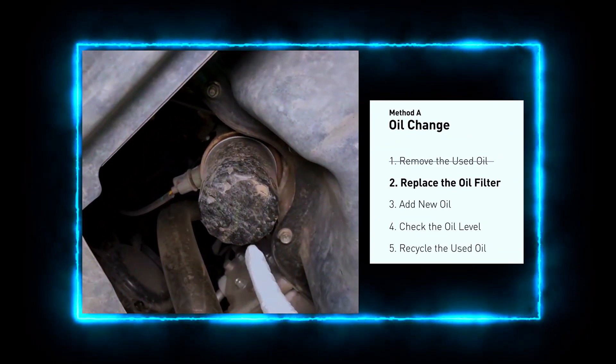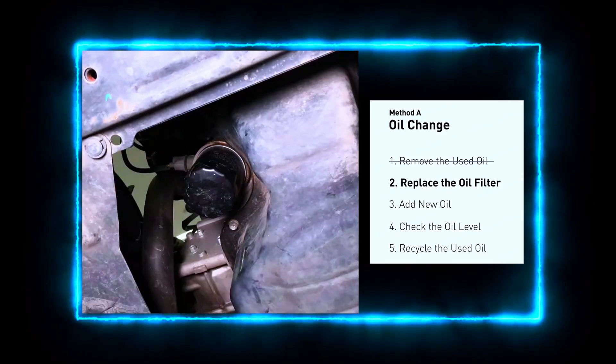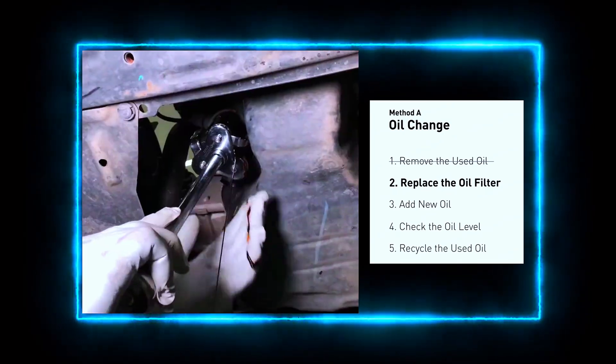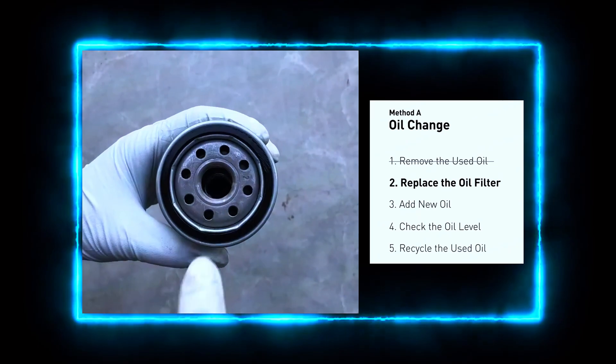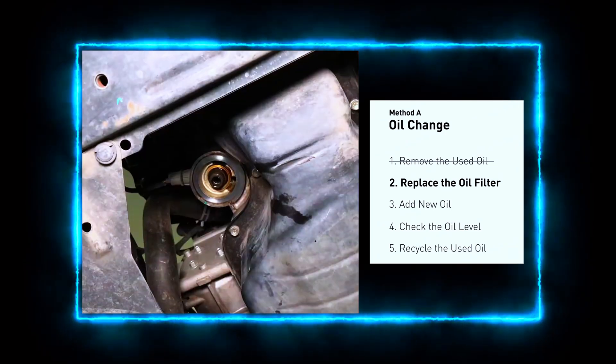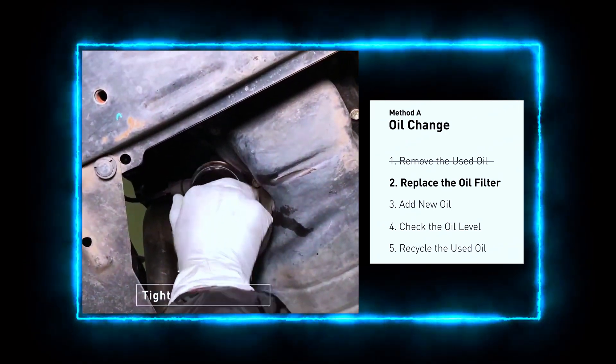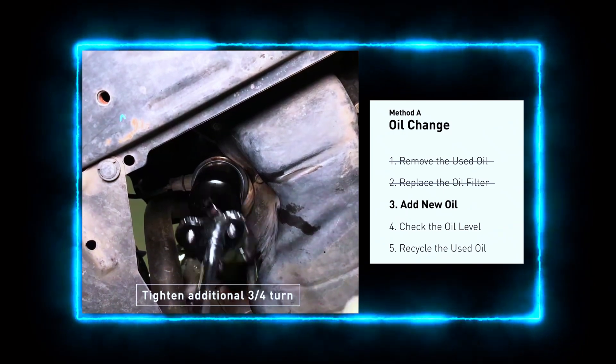Now let's replace the oil filter. Using your oil filter wrench, loosen and remove the old filter. Before installing the new one, lubricate the rubber gasket with a bit of fresh oil. Screw on the new filter hand tight.